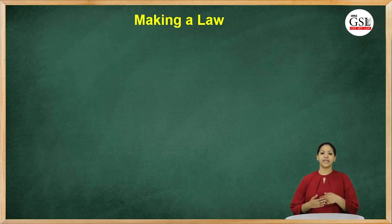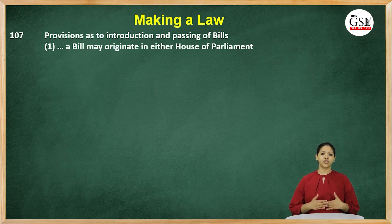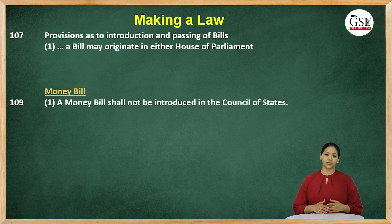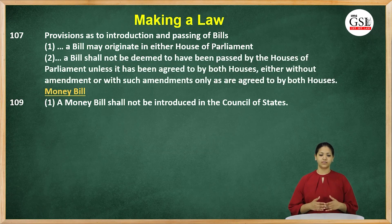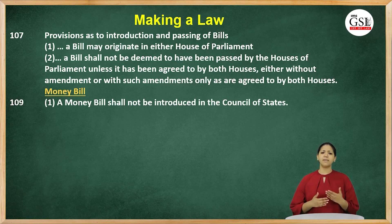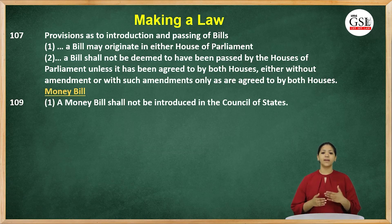The Rajya Sabha and the Lok Sabha are primarily tasked with the function of making laws. Each law starts off as a bill introduced either in the Lok Sabha or in the Rajya Sabha. All bills can be introduced in either house of the Parliament except money bills, which are introduced only in the Lok Sabha. Any member of the house can request the speaker or the chairman to allow for the introduction of the bill. Once the bill is introduced on the floor, it shall be scrutinized and debated upon, and may be passed after being amended with the required majority.